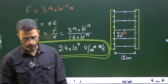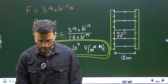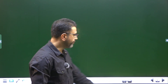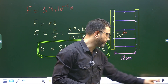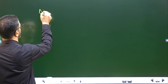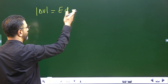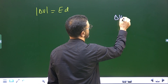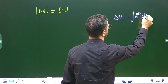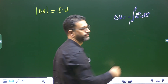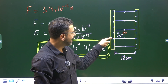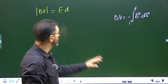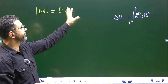E equals 2.4 × 10⁴ volts per meter or newtons per coulomb. Now we have to find the potential difference between the two plates. In the case of a uniform electric field, the magnitude of the potential difference is simply E into d — electric field into the distance. The basic equation is delta V equals negative of the line integral of E dot ds from initial to final. For a uniform electric field with displacement in the same direction as the field, this gives |ΔV| = E × d.